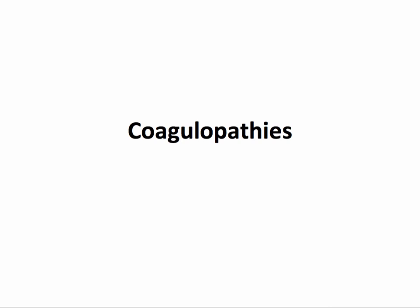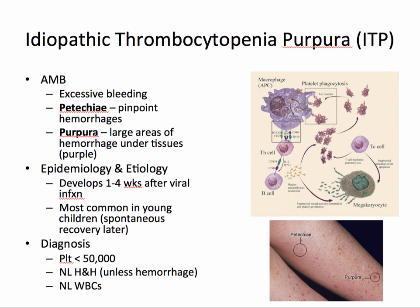In this final section we'll cover coagulopathies. Idiopathic thrombocytopenia purpura, or ITP, is an autoimmune destruction of platelets by antiplatelet antibodies. This results in excessive bleeding, petechiae or pinpoint hemorrhages, and purpura — large areas of hemorrhage under the skin, often purple but can also present as small red patches. This often develops one to four weeks after a viral infection, and is most common in young children with spontaneous recovery later.